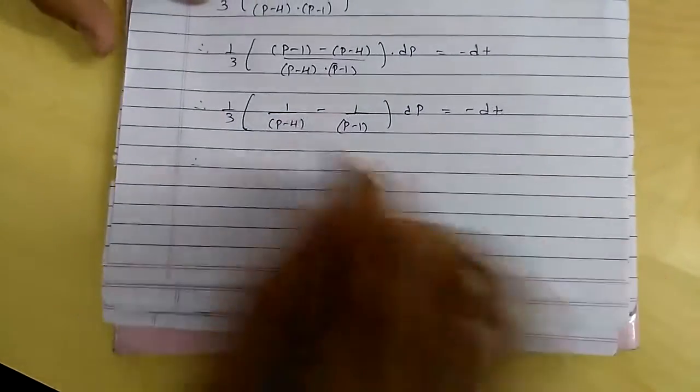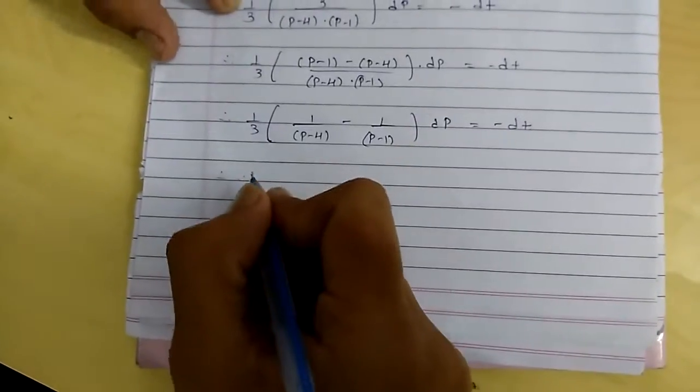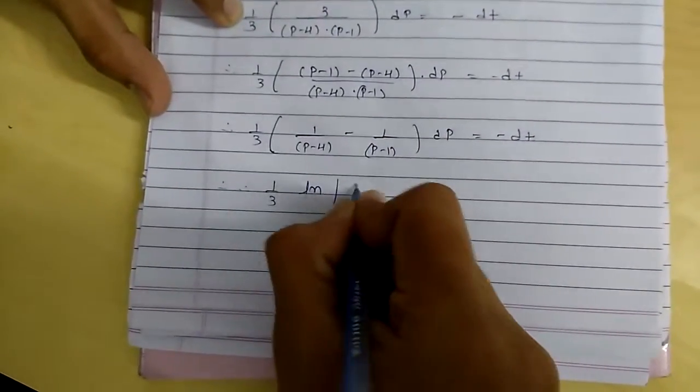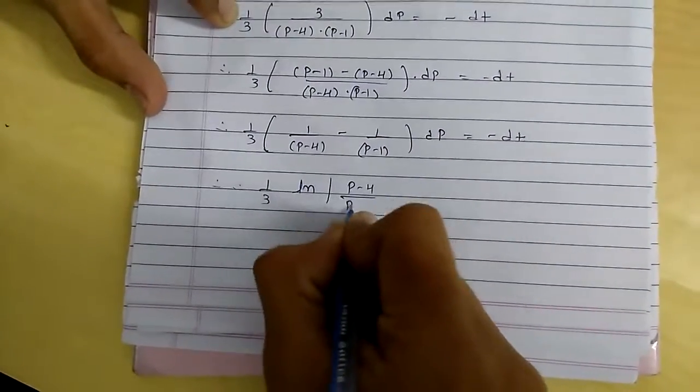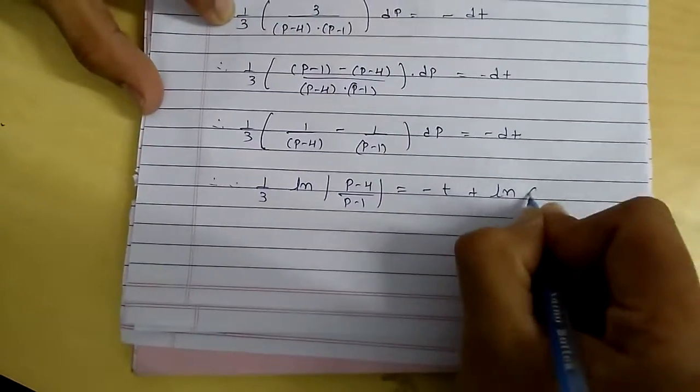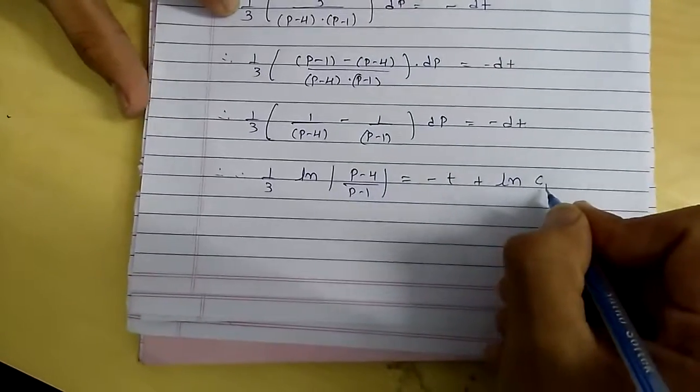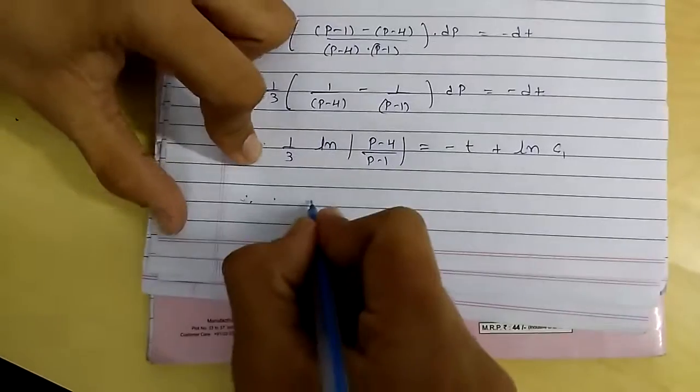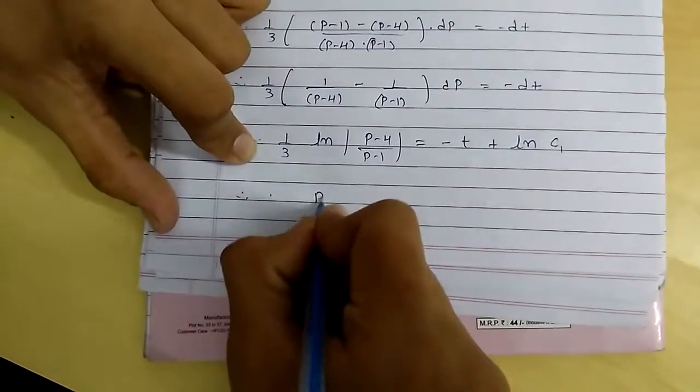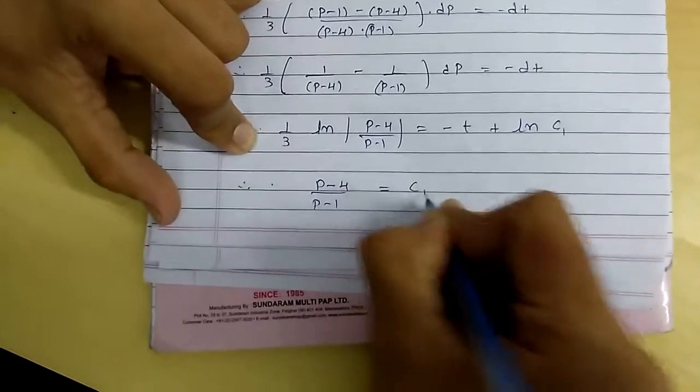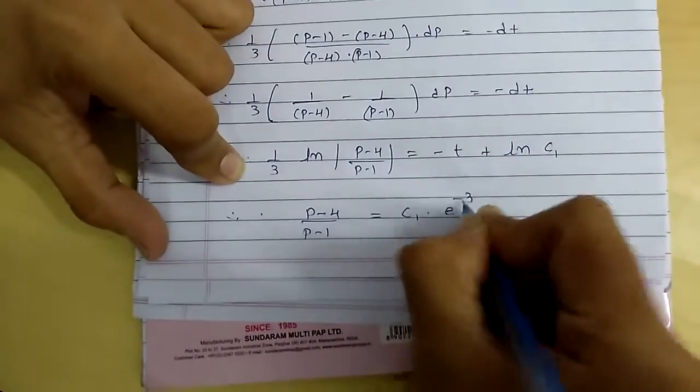Integrating both sides we get: (1/3) ln((p minus 4)/(p minus 1)) equals minus t plus ln(c1), where ln(c1) is some constant. So now we can get the solution: (p minus 4)/(p minus 1) equals c1 times e raised to minus 3t.